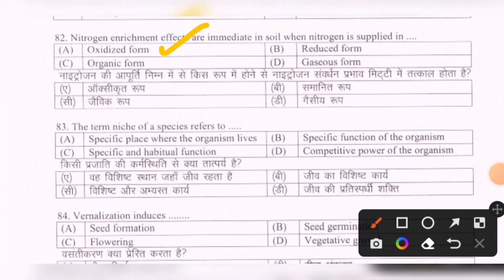Next question: The term niche of a species refers to — options are: the specific place where the organism lives; the specific function of the organism; specific and habitual function; competitive power of the organism. For this question, marks will be given to all candidates due to a discrepancy.